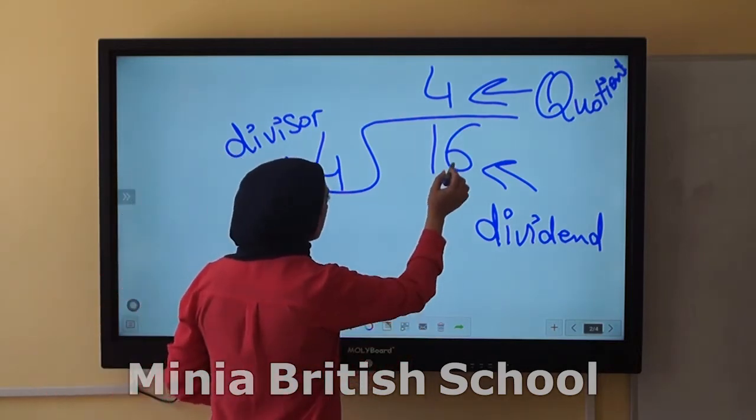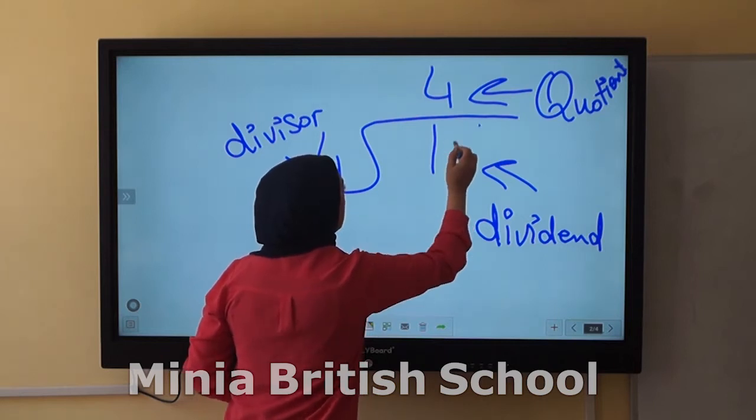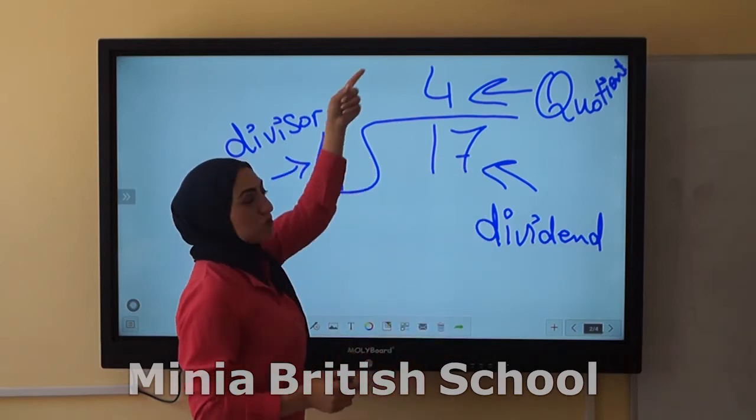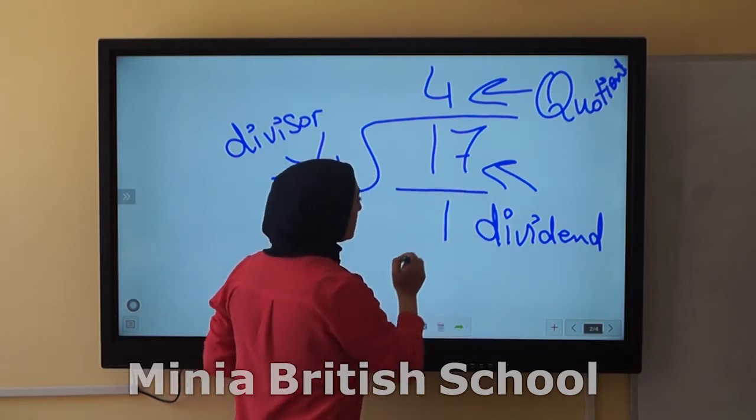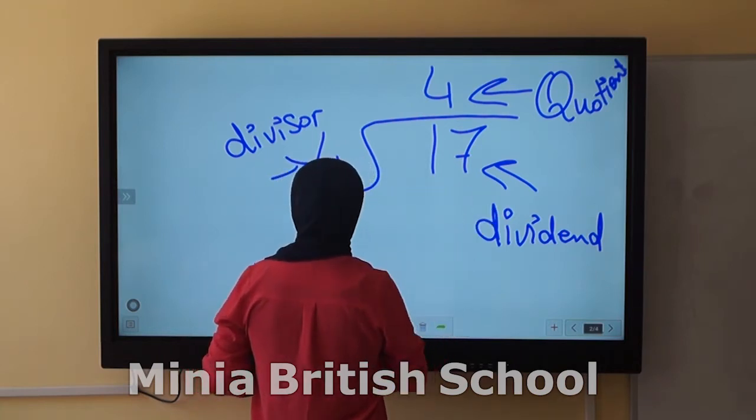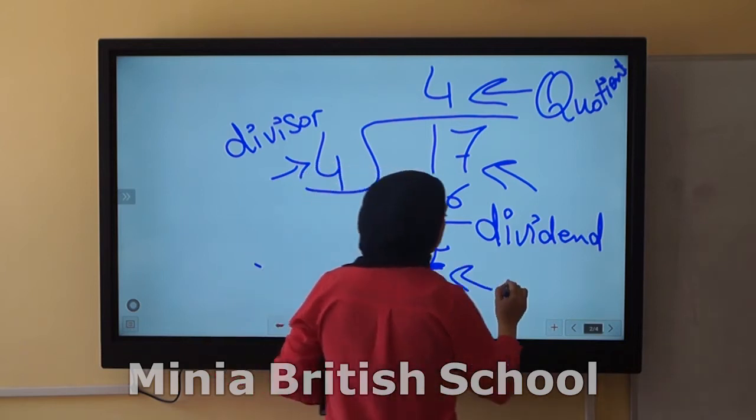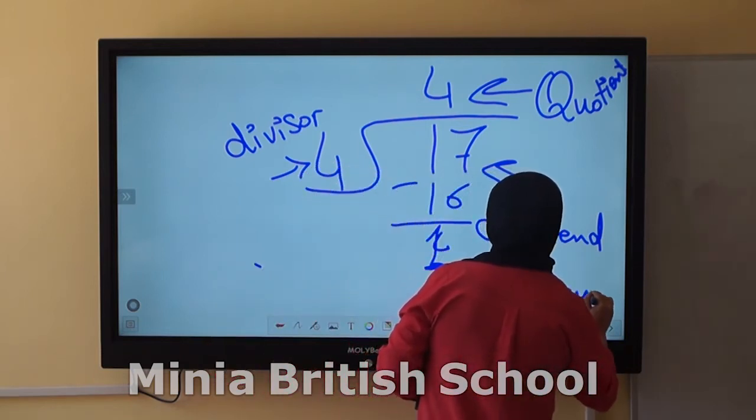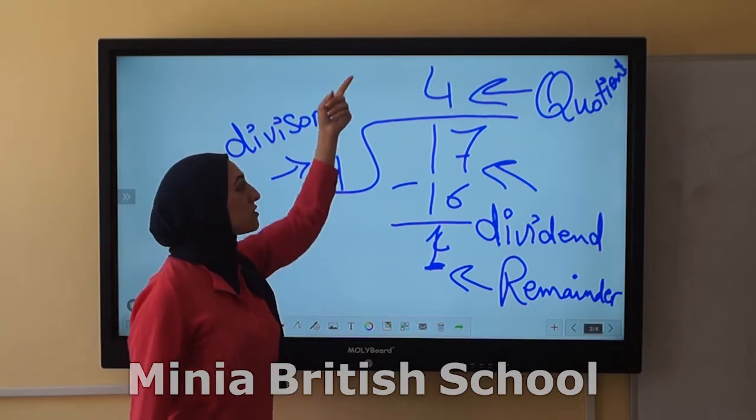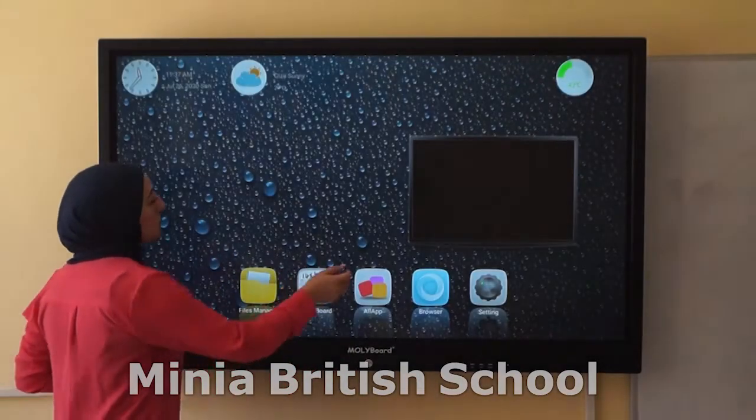If this number was 17, 17 divided by 4 equals 4 with remainder 1. This is the remainder. Again, we have dividend, and this is the divisor, quotient, and the remainder. But our lesson today hasn't the remainder.